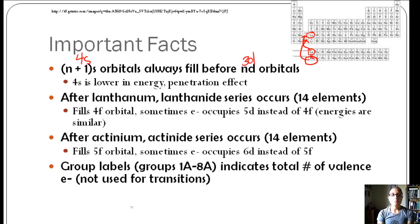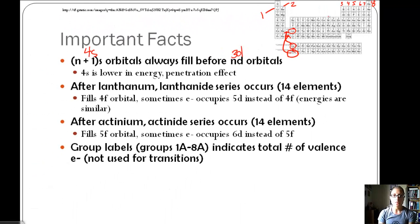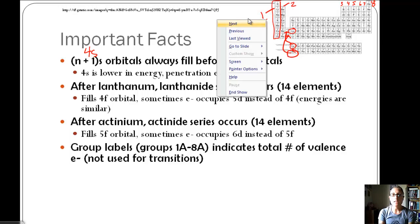We also have group labels. If you check out your periodic table, they're labeled 1a through 8a. This does not include transition metals. So we have 1a, 2a, 3, 4, 5, 6, 7, and 8. This indicates the total number of valence electrons. Remember, so we're not using transition metals. Previously we talked about how this group, alkali metals, had one valence electron. Well, this is also telling you that.